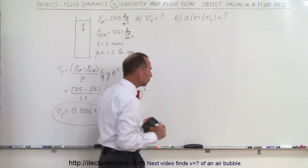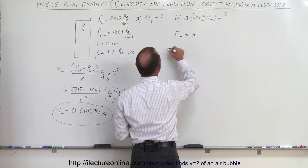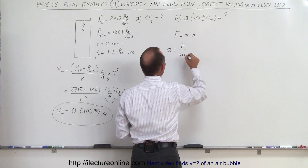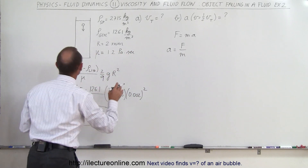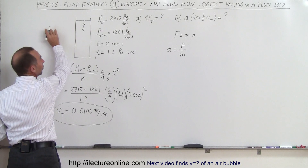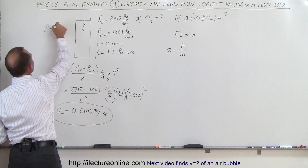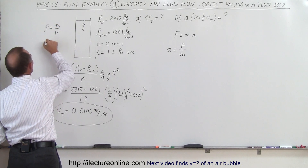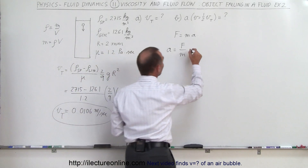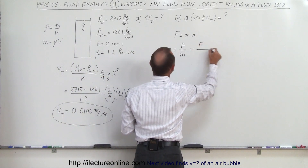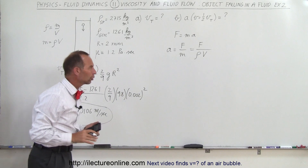Think back to Newton's second law: F equals ma, which means acceleration equals the net force divided by the mass of the object. The mass is simply density times volume, since density equals mass divided by volume. So we write the acceleration as the net force applied divided by the density of the sphere times the volume, where the volume is four-thirds pi r cubed.